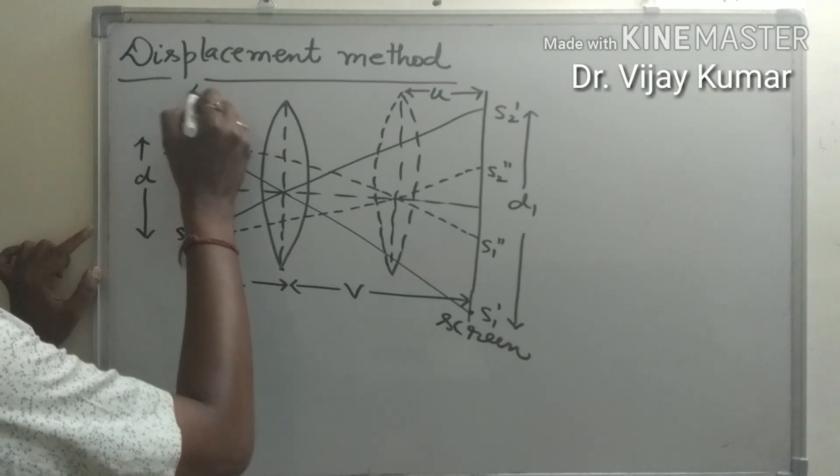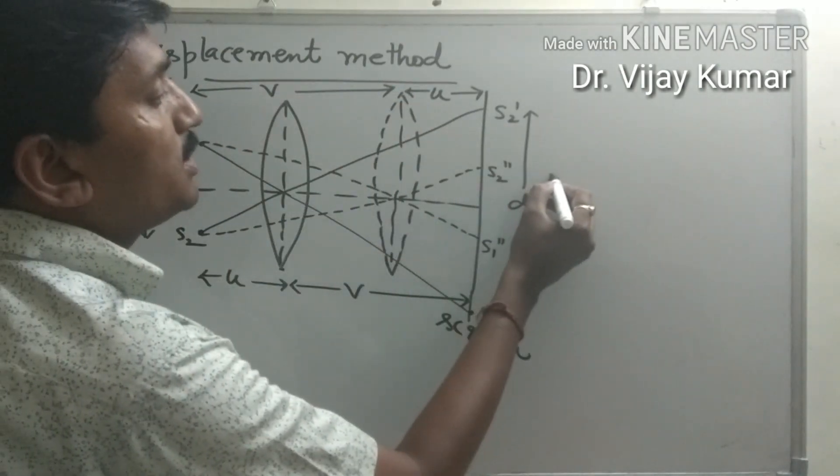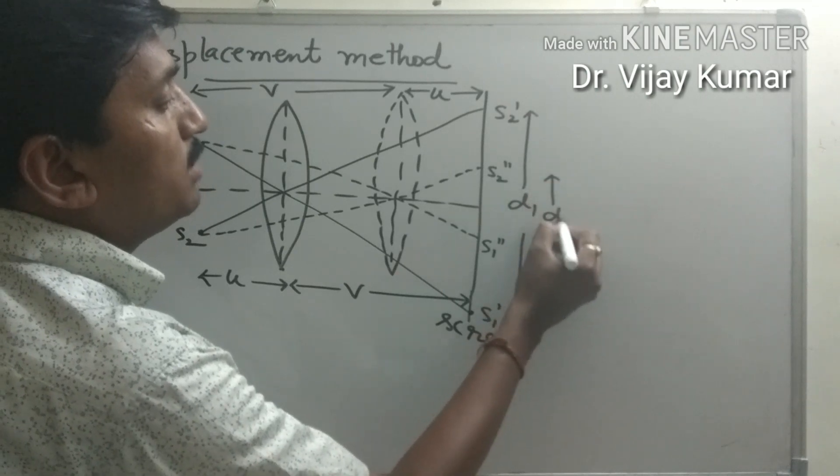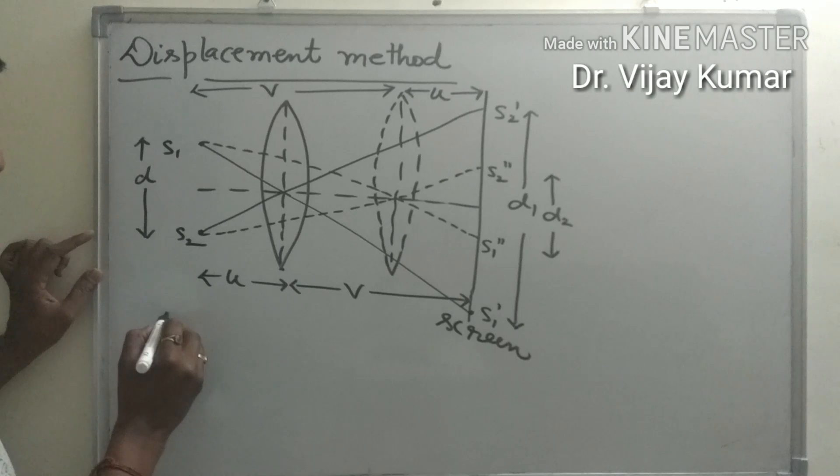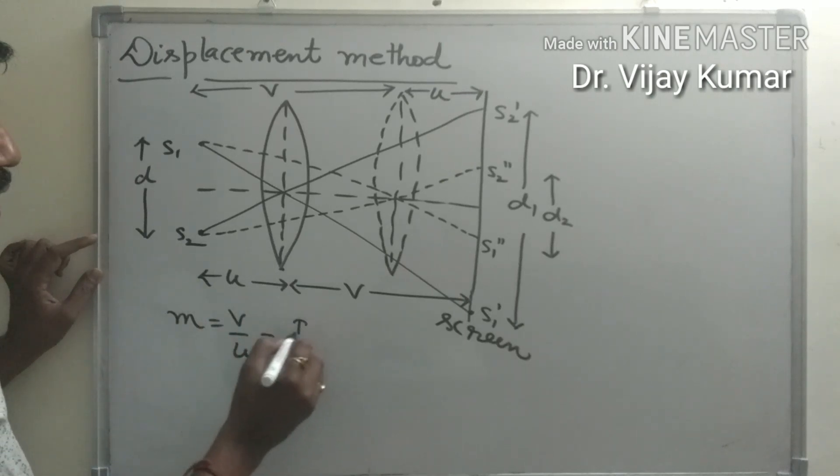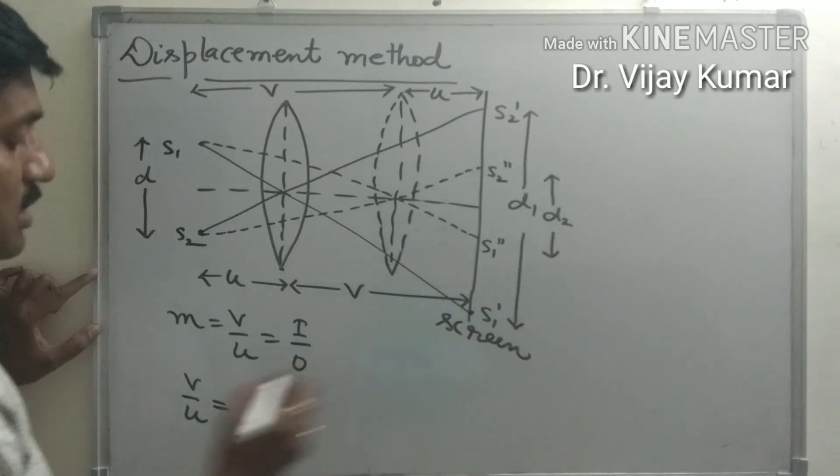and this distance becomes v, and the separation of the image now becomes d2. Now we know that magnification equals v upon u equals i upon o. In the first position, v upon u equals i, which means d1